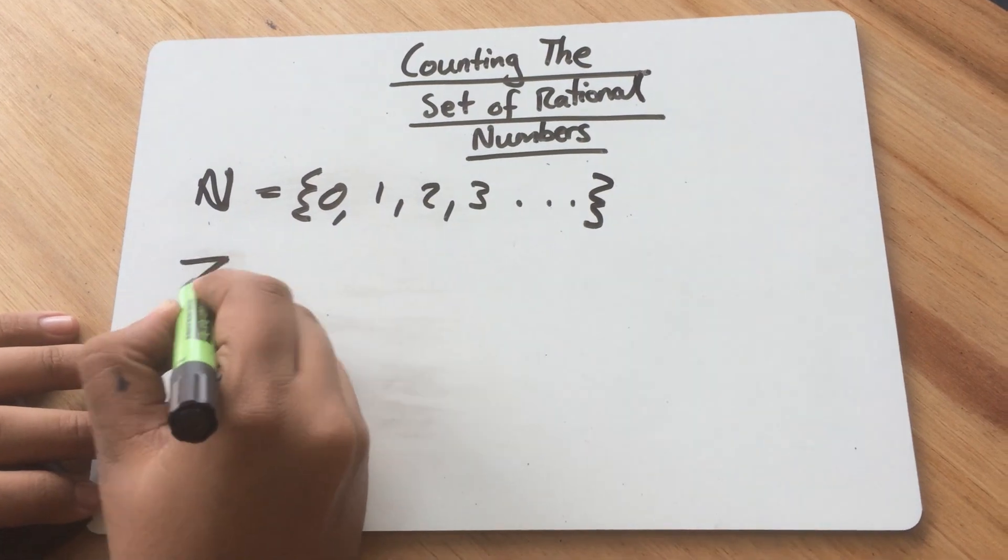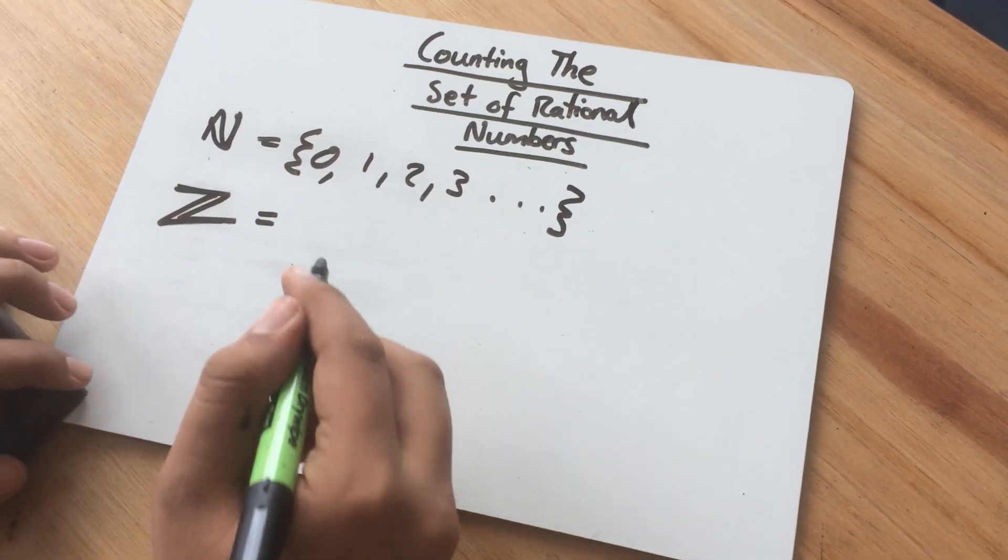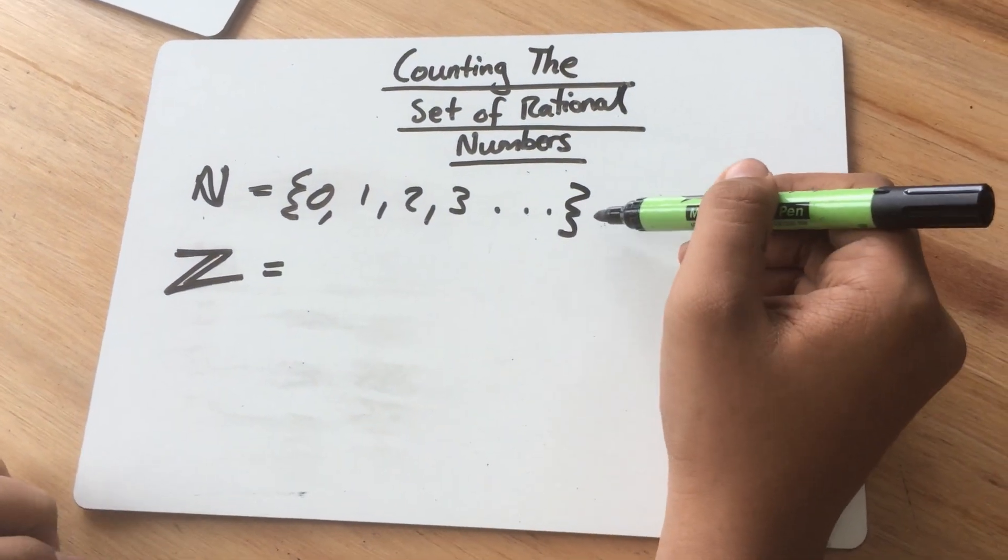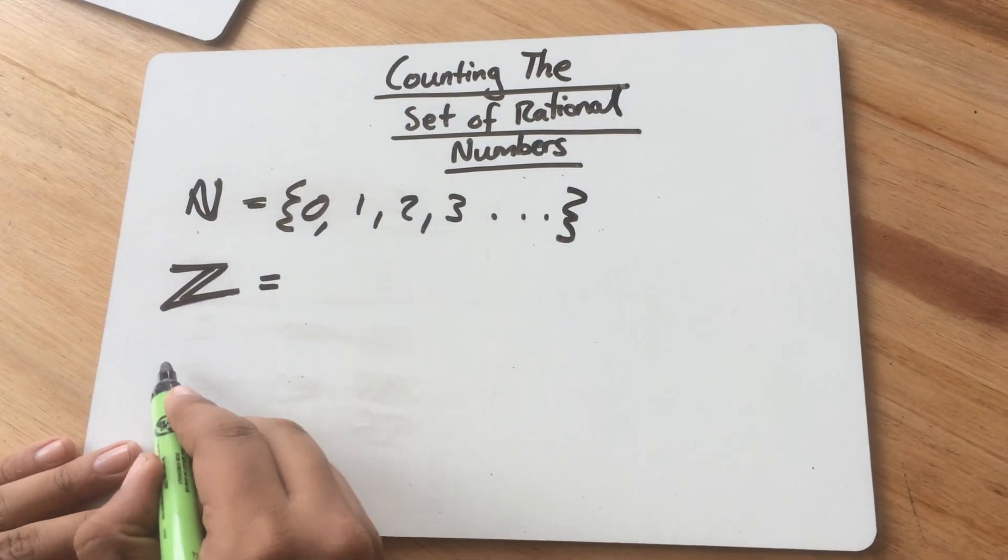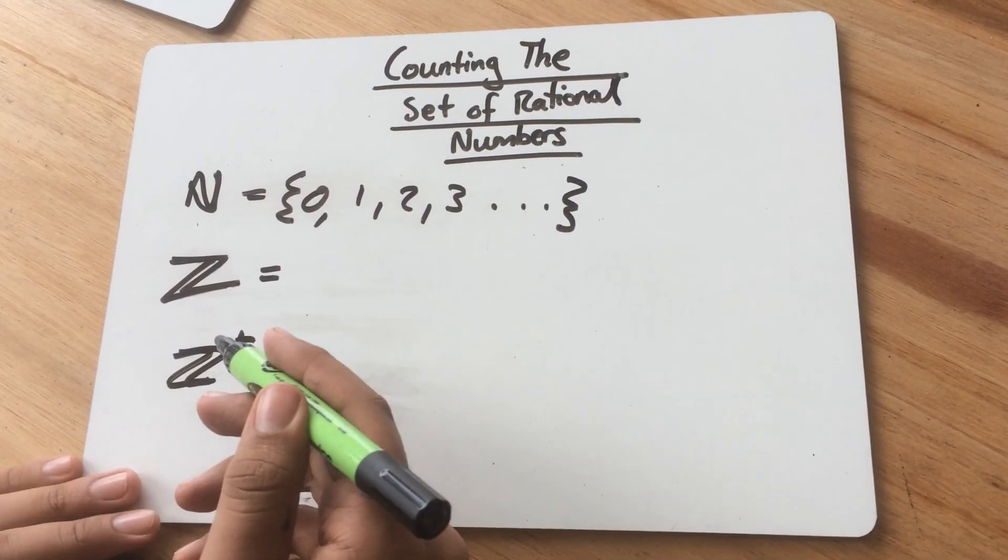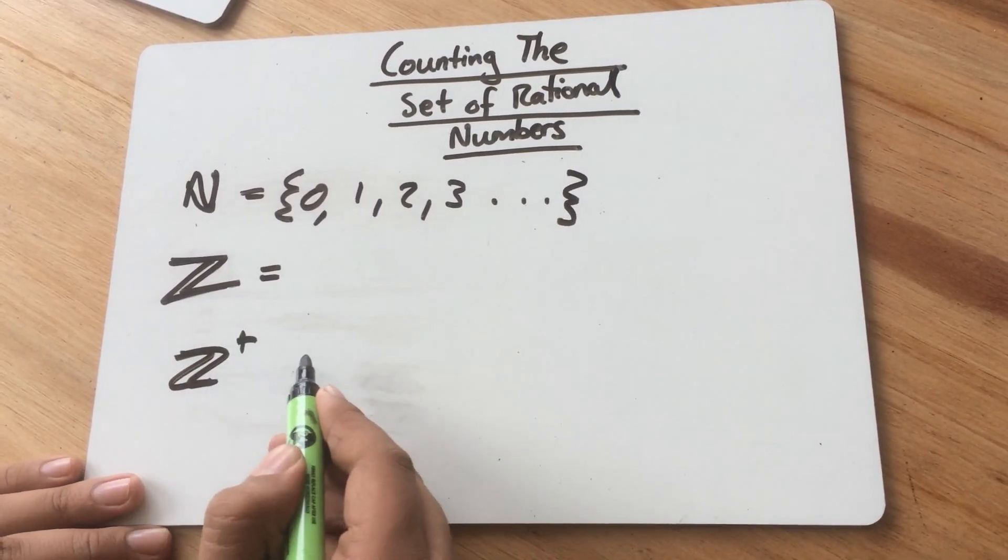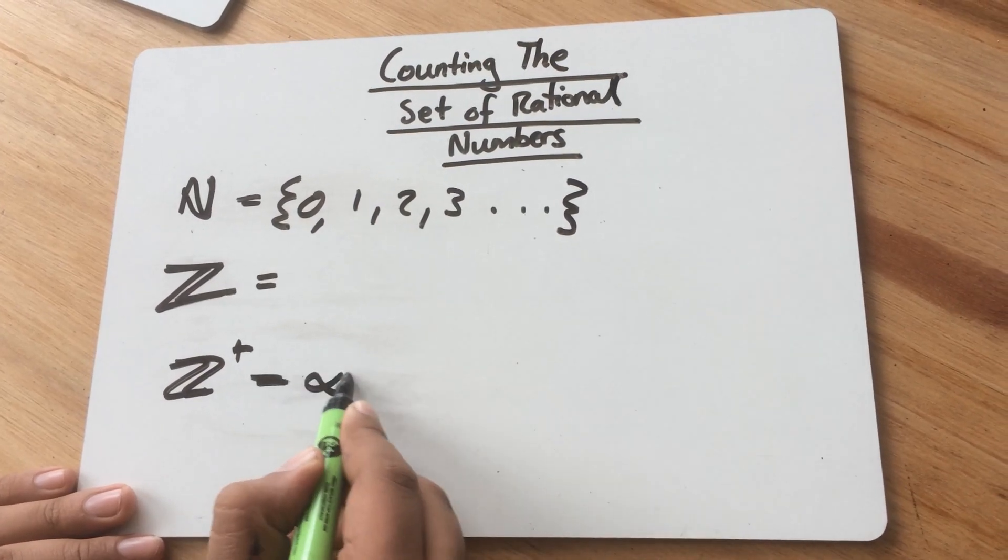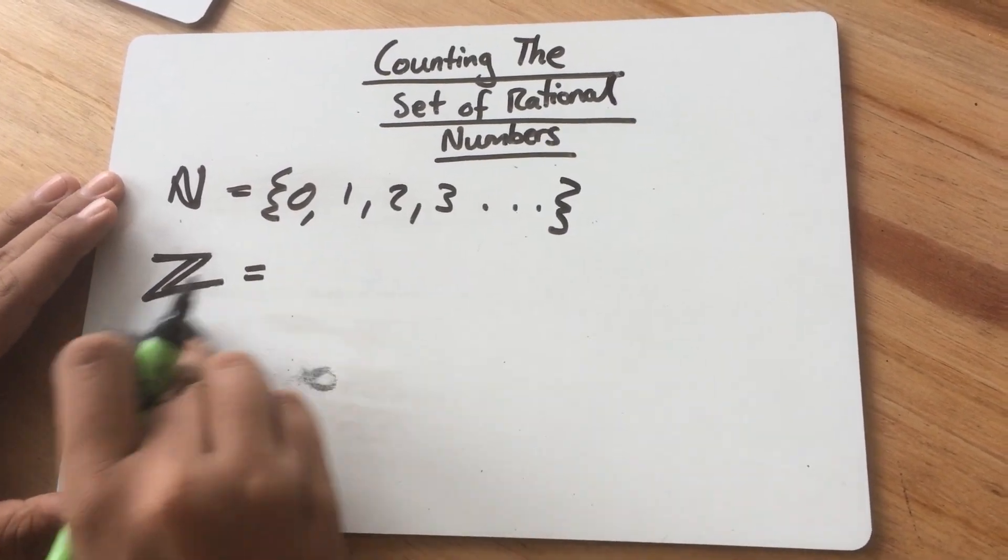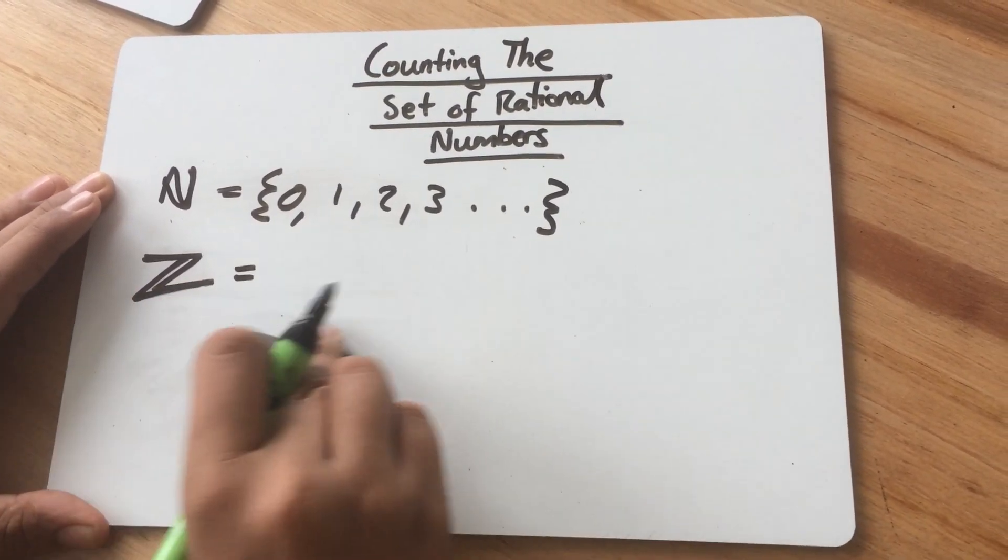Next, we have to count the set of integers. So, in the set of integers, we can't use the same trick as we did with the set of natural numbers, because if we try to count all of the positive integers first, we won't get to the negative integers, because the positive integers are infinite. And the same goes for the negative integers.